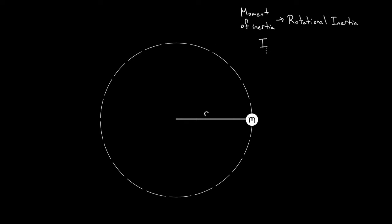The reason you want to know the moment of inertia is because it tells you how difficult it'll be to angularly accelerate something. It shows up in the angular version of Newton's second law: angular acceleration equals net torque divided by the moment of inertia. We're dividing by the rotational inertia, so if it's big, you get a small angular acceleration, and if the moment of inertia is small, you'll get a relatively larger angular acceleration.